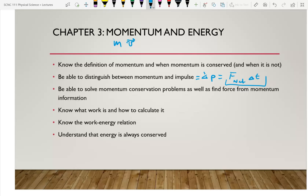Momentum is conserved when the net force is zero — it comes from Newton's second law. If the net force is zero, the change in momentum is zero. For example, two people on ice skates with no friction: the net external force is zero, so the momentum of the system is conserved. If one pushes the other, they go in opposite directions. Momentum of the ball alone rolling down a hill isn't conserved because the net force on it isn't zero.